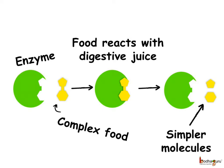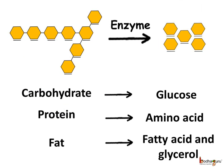What is produced in the digestion? The different nutrients, like carbohydrates, proteins, and fats, are different chemicals. They take part in reactions with different chemicals, so they are broken down into different simpler substances. For example, carbohydrates are broken down into glucose, proteins are broken down into simpler amino acids, and fats are broken down into fatty acid and glycerol.